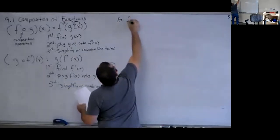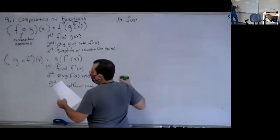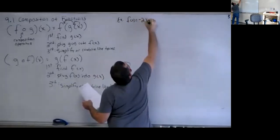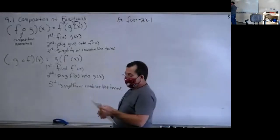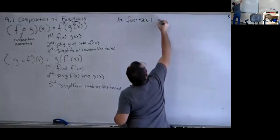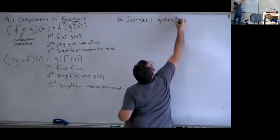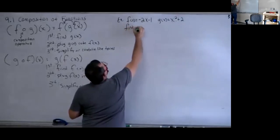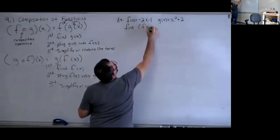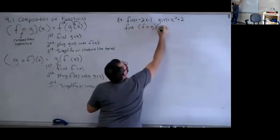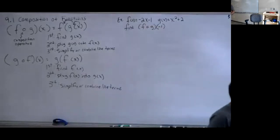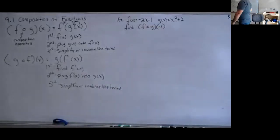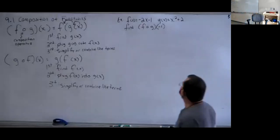So I'm going to let f of x equal negative 2x minus 1, and g of x is x squared plus 2. They want me to find f composed g of negative 1. The first three examples give you numbers to plug in; the last three will just give the variable, so those might be a little trickier. This is like f of g of negative 1, so the first thing I'm going to do is find g of negative 1.